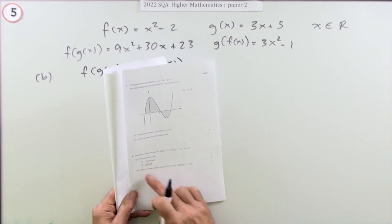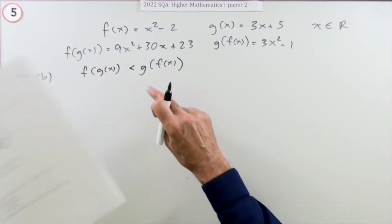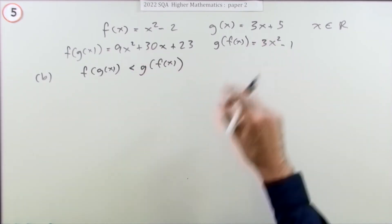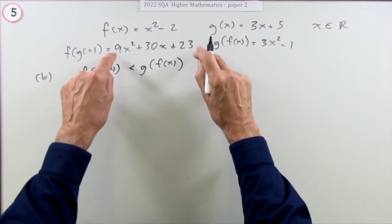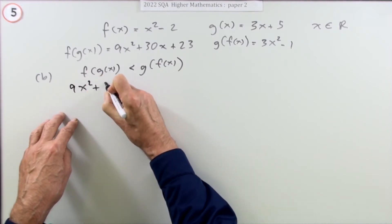Part B: Determine the range of values of x for which f(g(x)) is less than g(f(x)). You've already worked them out in the first part. Just put them in: 9x squared plus 30x plus 23